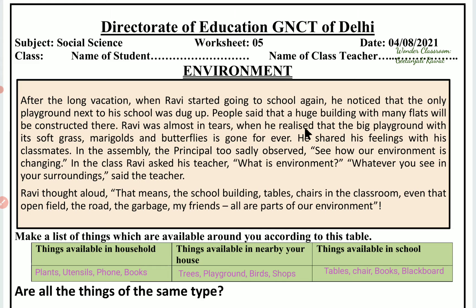People said that a huge building with many flats will be constructed there. Ravi was almost in tears when he realized that the big playground with its soft grass, marigolds and butterflies is gone forever — everything will be done away with there.